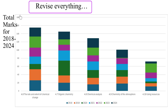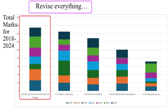When we look at a graph of the total marks that have been available for each topic across all seven papers, you can see that one topic stands out slightly ahead of the other four, and that is the rate and extent of chemical change — so rate of reaction and reversible reactions. Then we've got organic chemistry, chemical analysis, chemistry of the atmosphere, and using resources, progressively worth fewer marks.